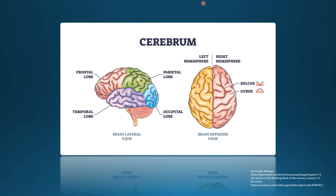The cerebrum is the largest part of the brain and it's divided into two halves: the right and left cerebral hemispheres. The left hemisphere is dominant in most people and controls right-sided body functions, while the right hemisphere controls most left-sided body functions. Normal functioning requires effective coordination between both hemispheres. These hemispheres are connected by a large bundle of white matter called the corpus callosum, which is an area of sensory and motor information exchange between the two hemispheres.